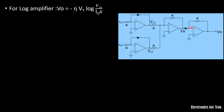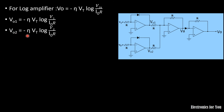To calculate Vo, we first find V01 and V02. Using the log amplifier equation, V01 = −η·Vt·log(V1 / I0·R), replacing Vin with V1. Similarly, V02 = −η·Vt·log(V2 / I0·R), replacing Vin with V2.